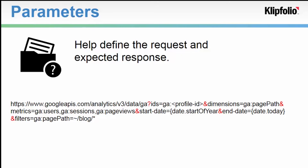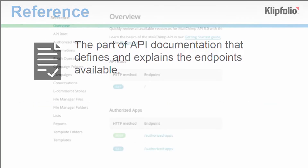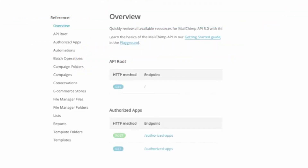So where do you find all the possible endpoints and parameters? All this information is documented in what's called the API reference. Sometimes it's just woven right into the API docs. Notice how in this example, underneath the reference, we can see that the MailChimp API allows us to retrieve information about campaigns, lists, reports, and so on.